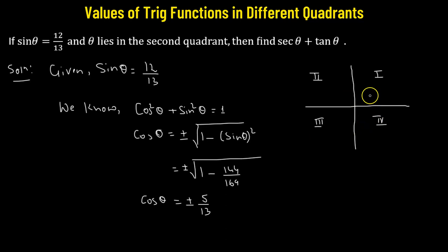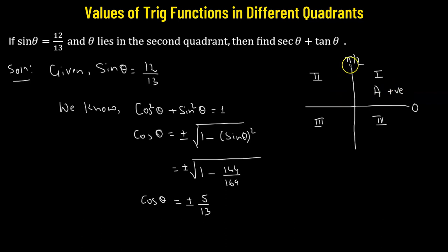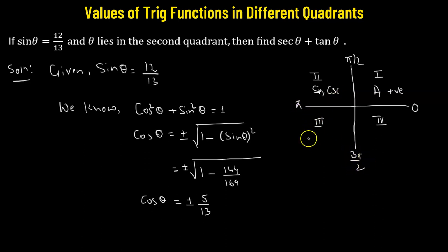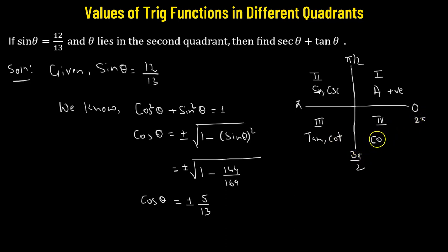Going in the anti-clockwise fashion: in the first quadrant, where theta lies between 0 and pi over 2, all trig functions are positive. In the second quadrant, where theta lies between pi over 2 and pi, only the sine and cosecant functions are positive, the rest are negative. In the third quadrant, with theta between pi and 3 pi over 2, tangent and cotangent are positive, rest are negative. In the fourth quadrant, with theta between 3 pi over 2 and 2 pi, cosine and secant are positive, rest are negative.